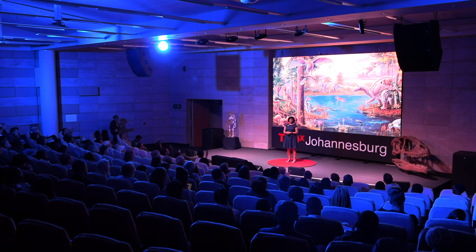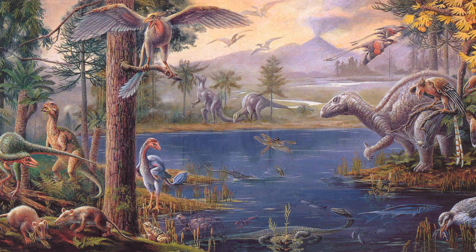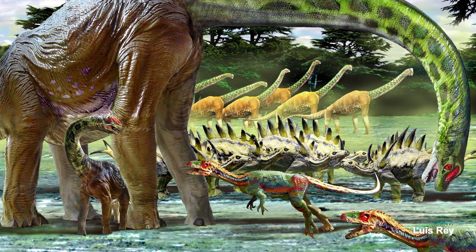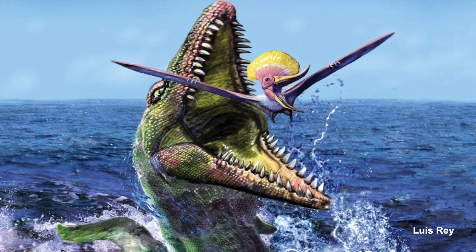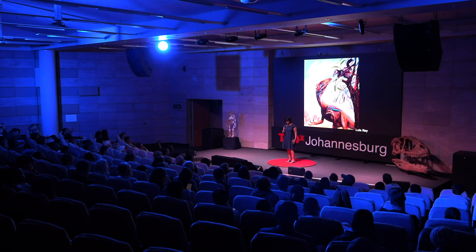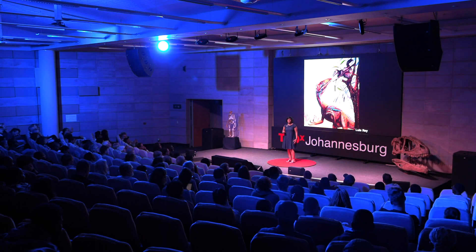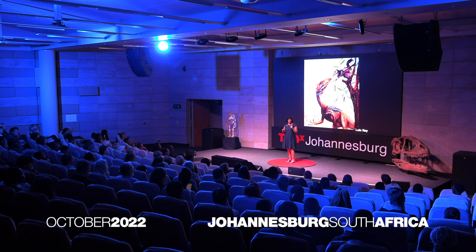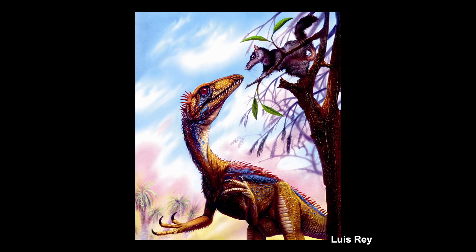In the Mesozoic, about 150 million years ago, our planet looked very different. Dinosaurs walked the earth, and in our skies, flying reptiles flew. The oceans teemed with marine reptiles, and our closest living relatives at that time were small, rodent-sized mammals that lived in the shadow of the dinosaurs.